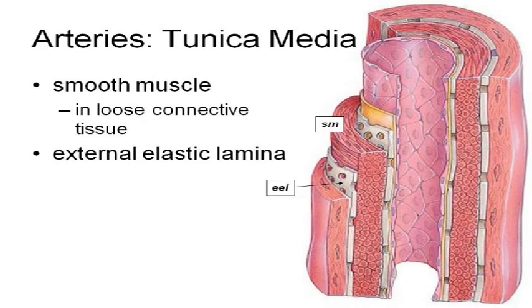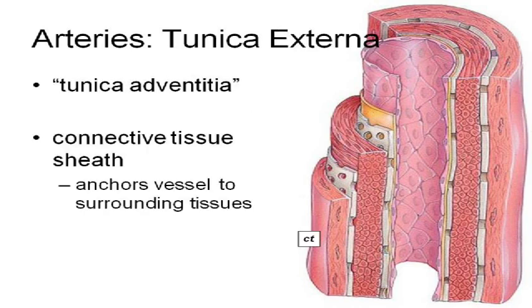The tunica media is mostly smooth muscle and another bit of elastic tissue — the external elastic membrane. The job of the smooth muscle is to control the diameter of that vessel. Arteries have thicker layers to withstand pressure, and arterioles in particular have a great capacity to adjust the diameter of the blood vessel by contraction or relaxation of those smooth muscles. The tunica externa — the adventitia — is a connective tissue sheet that basically holds the blood vessel in place.